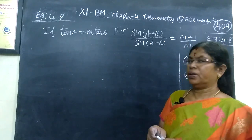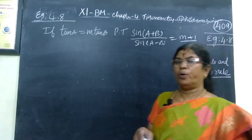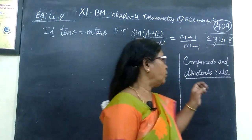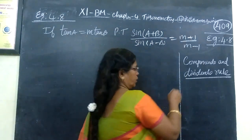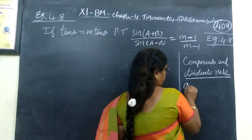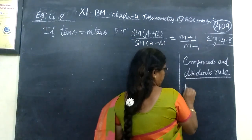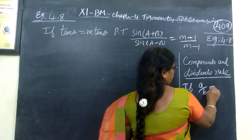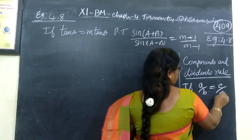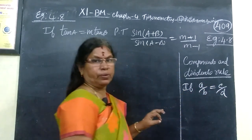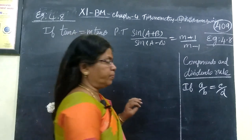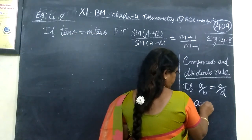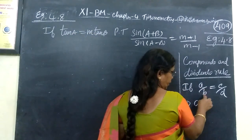For this, we are using the componendo and dividendo rule. What is this rule? If a by b is equal to c by d, then this implies a certain relationship between the components.